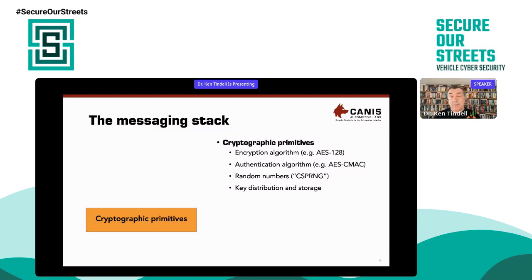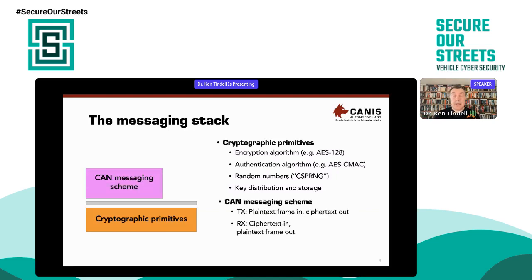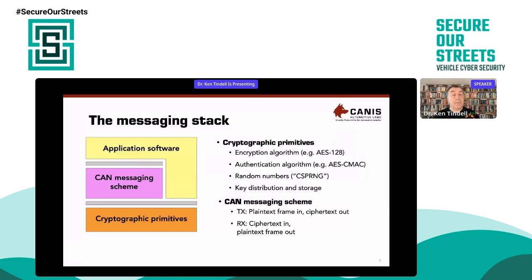If we look at the messaging stack for the encryption system on CAN: at the bottom are cryptographic primitives — an encryption algorithm (in this case AES-128 with 128-bit keys), an authentication algorithm, random numbers, and key distribution. On top of that is the CAN messaging scheme — plaintext messages in, ciphertext out on the send side, and ciphertext in, plaintext frame out on the receive side. Above the messaging scheme is application software, which calls into the messaging scheme for its messages and into the cryptographic primitives for setting and managing keys.